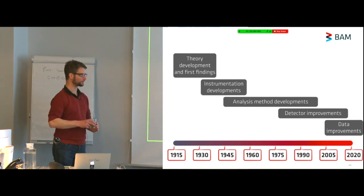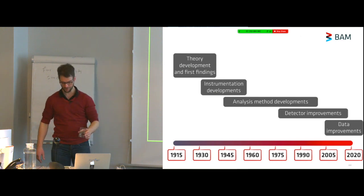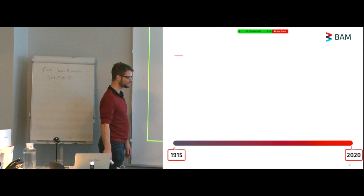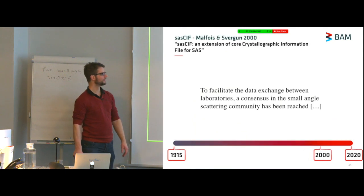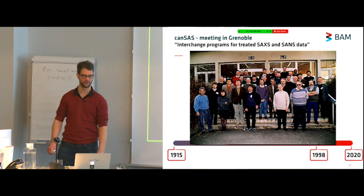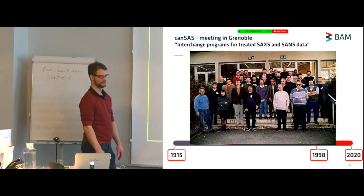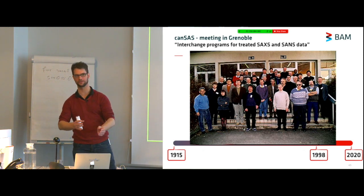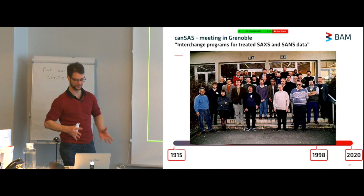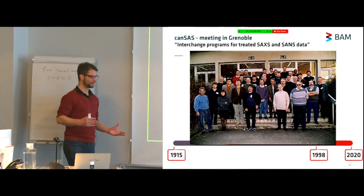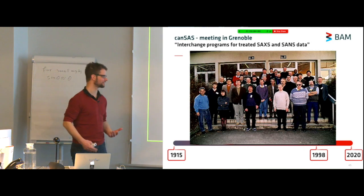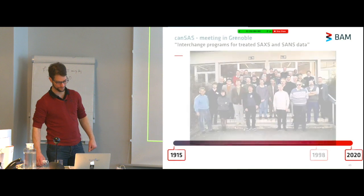So lastly, almost lastly, I wanted to talk about data improvements. Of course, getting better data isn't enough. You also need to store that data in a structure that you can use. In 1998, there was a group coming together in Grenoble. This was the canSAS group, a group of scientists from X-ray and Neutron facilities who said, okay, we're producing our data in this format, you're producing your data in that format. I can't use your software, you can't use my software. Can we maybe make a translation tool to translate between the different formats? What they did was to try and then develop a universal data format, which took a little bit longer than just writing a translator. But the initial idea was to write a translator.